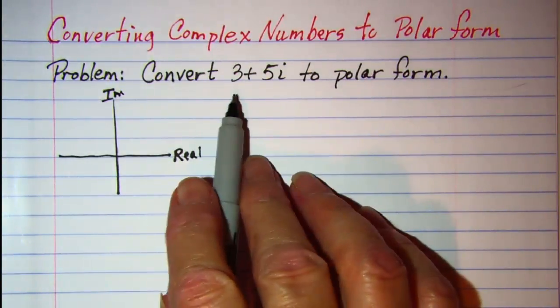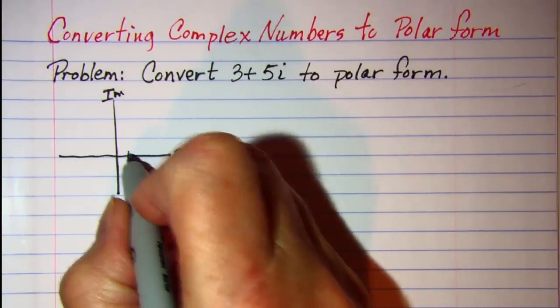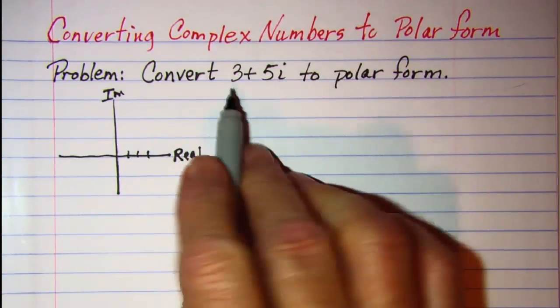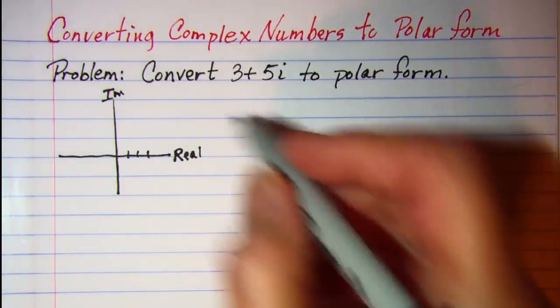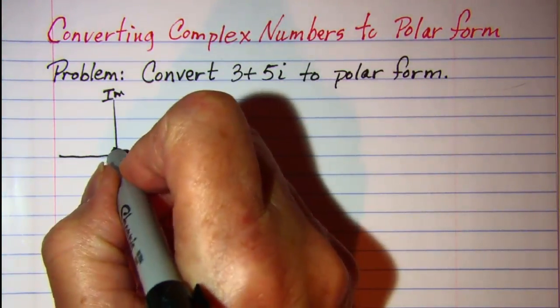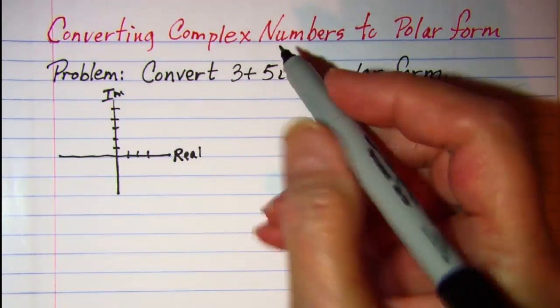So to graph 3 plus 5i I would go to the right 3 on the real axis since this is my real number and then I would go up 5 on my imaginary axis.